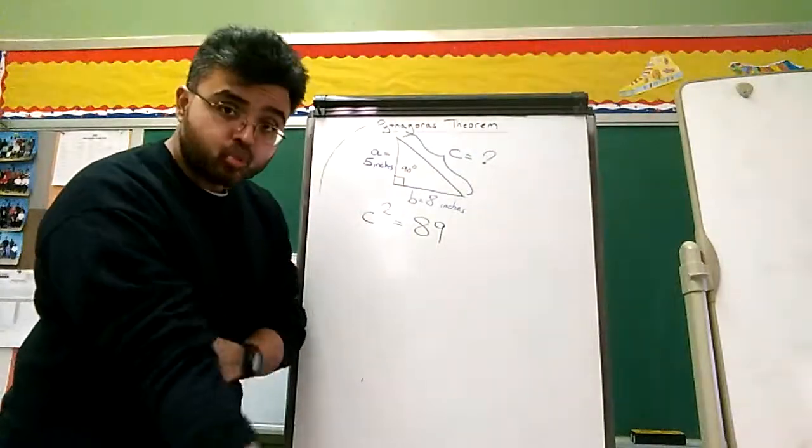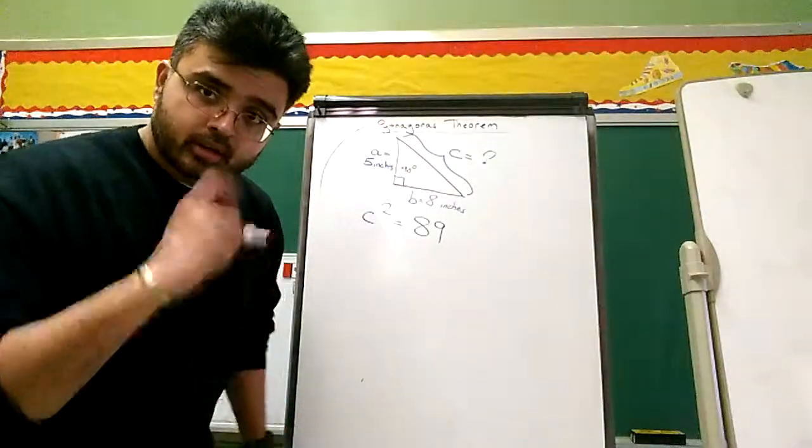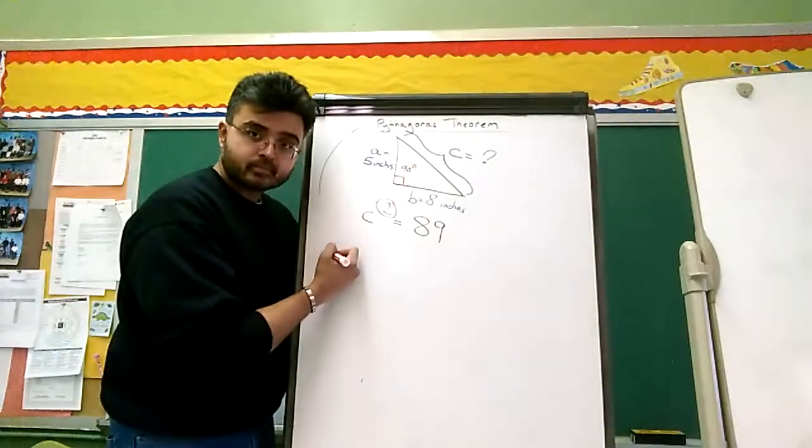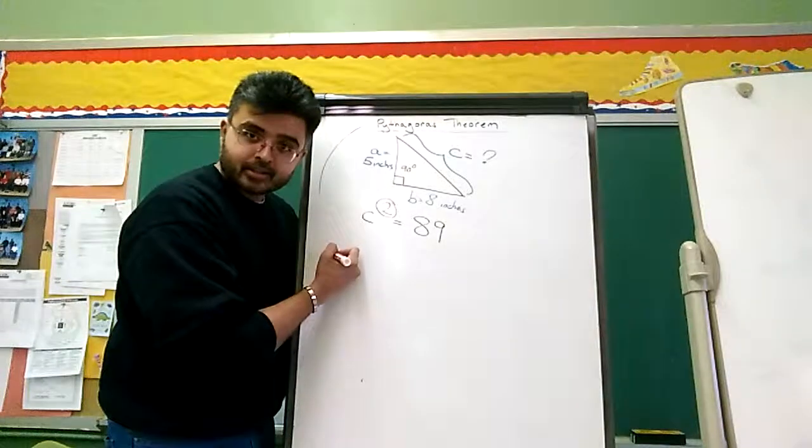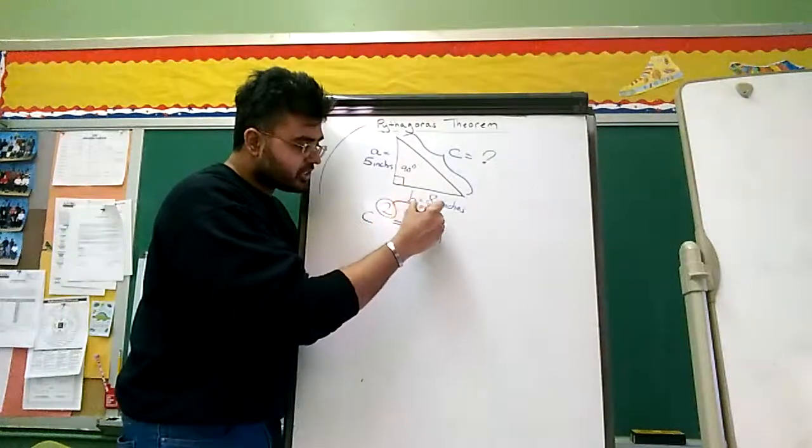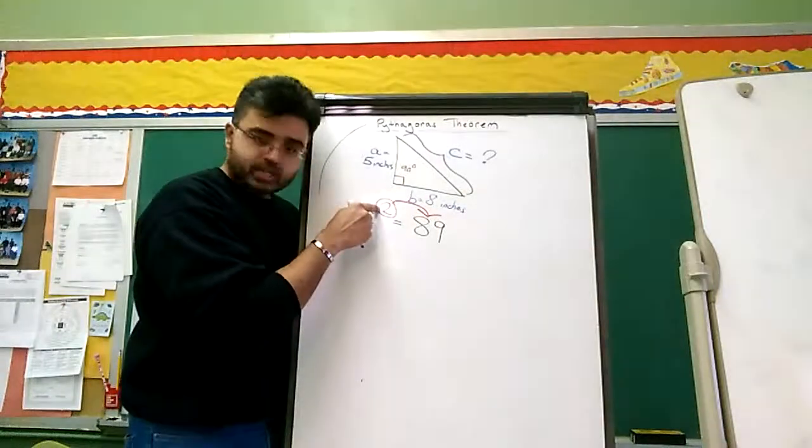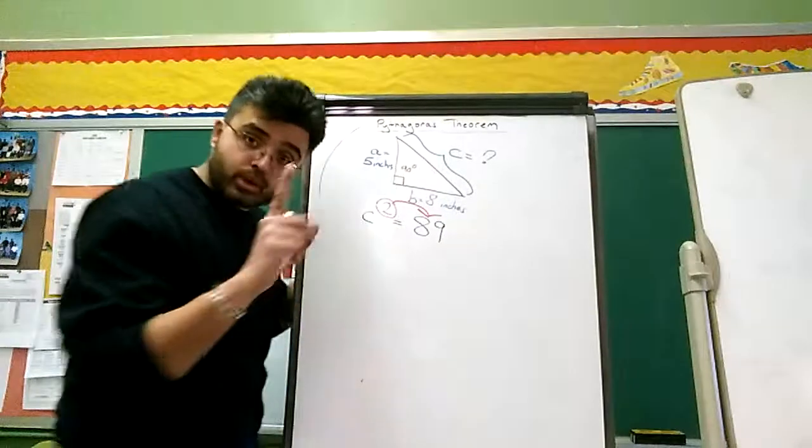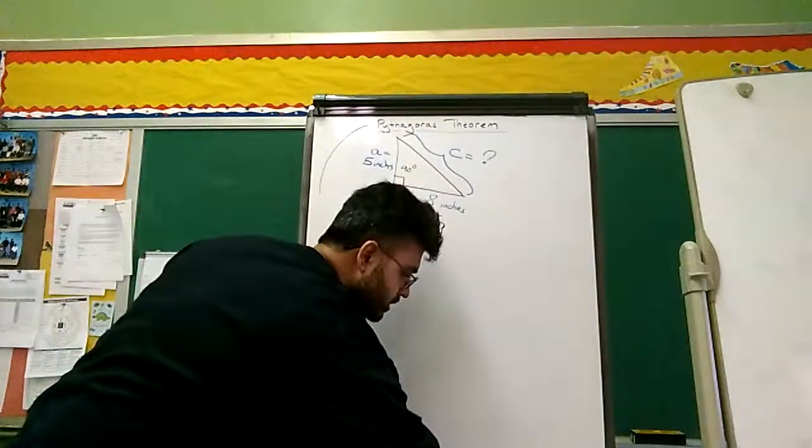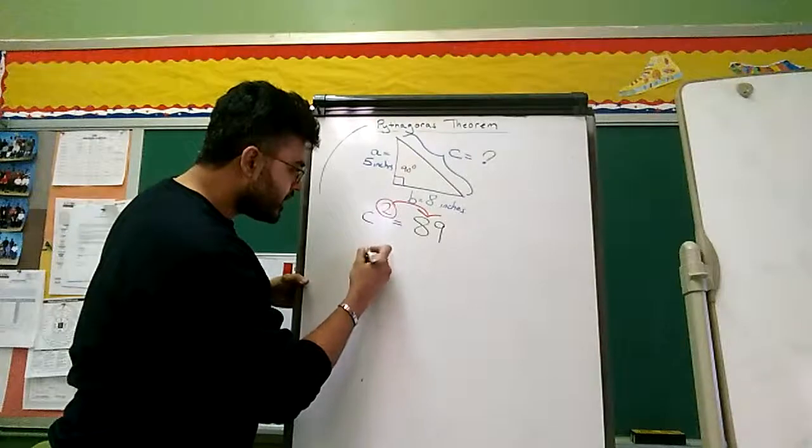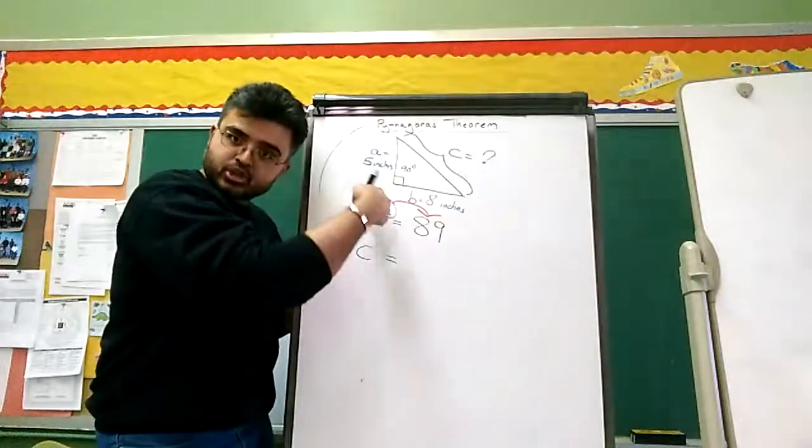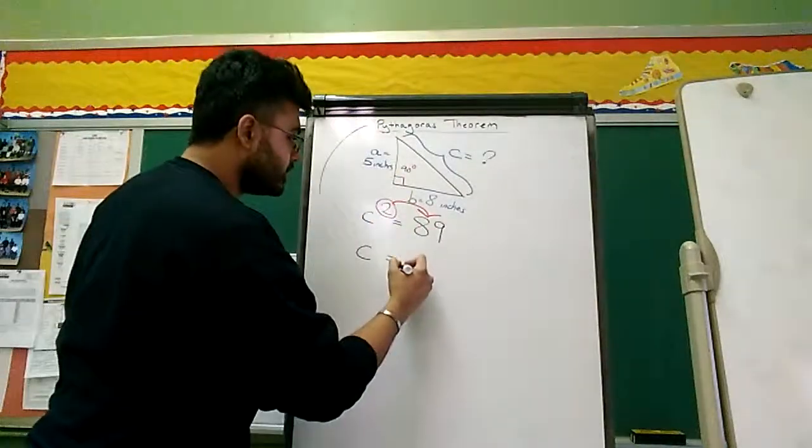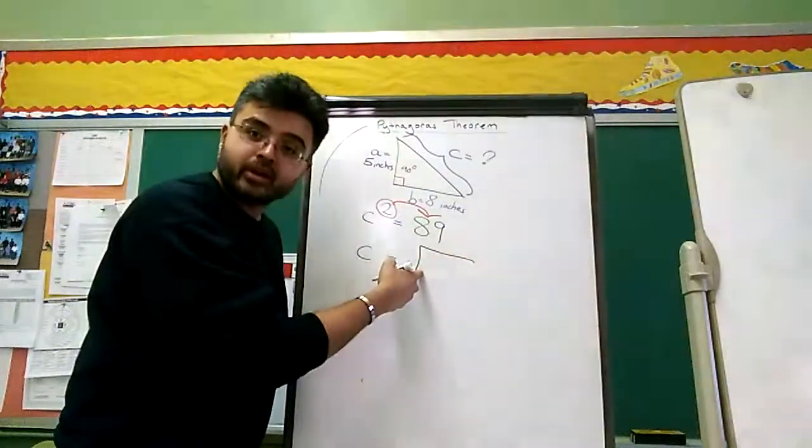And there is only one way you can get rid of a square. First, you circle the number. Next, you jump across the equal sign. You take the square and you jump across the equal sign. And when you do that, the square disappears because you jumped across the equal sign. And the square turns into a square root.